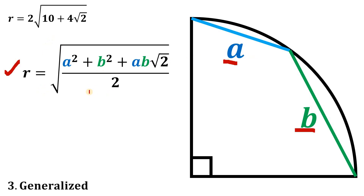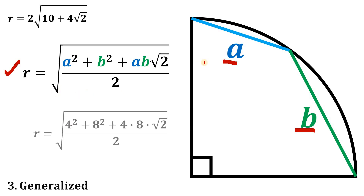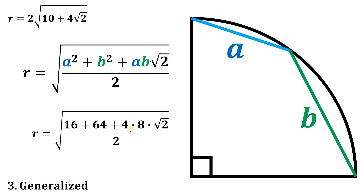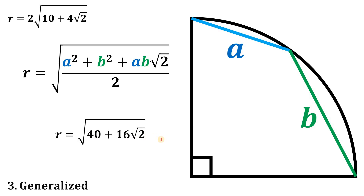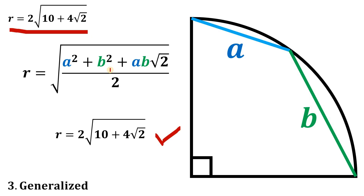Let's verify the formula with a = 4 and b = 8: r = √(4² + 8² + 4·8·√2/2) = √(16 + 64 + 32√2/2) = √(80/2 + 16√2) — wait, simplifying: (16 + 64) = 80, divided by 2 gives 40, and 32/2 = 16, so r = √(40 + 16√2). Factoring out 4: r = 2√(10 + 4√2), confirming our answer.